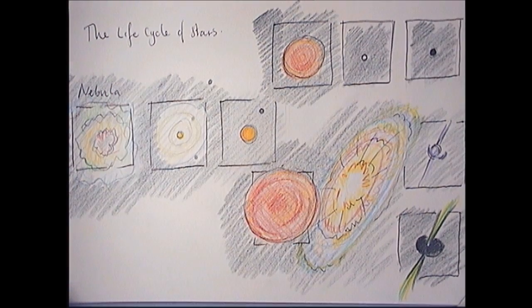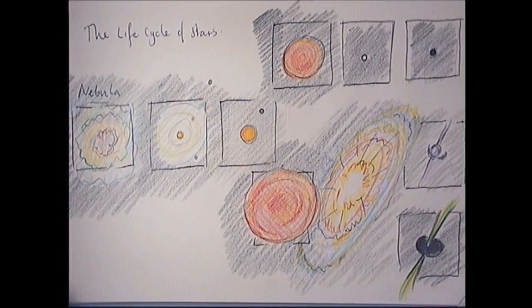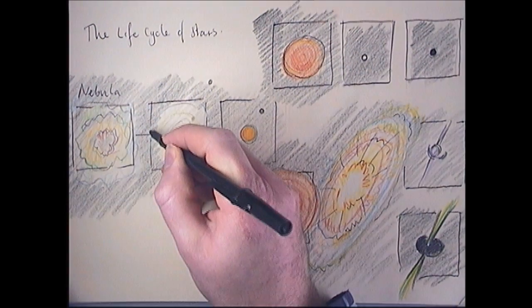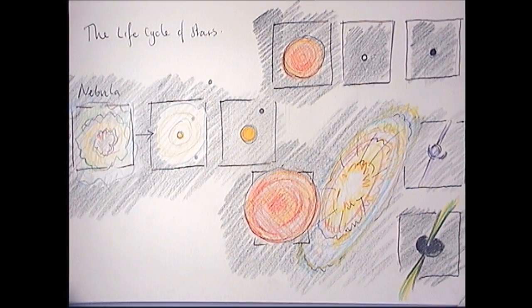A cloud of gas and dust in outer space, gravity makes it spin and makes it contract. And what happens in the center there is all of the particles start to rub together due to friction and you get heat and pressure.